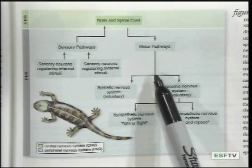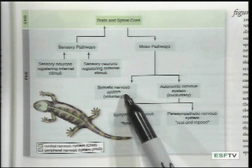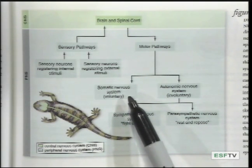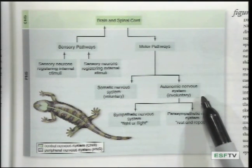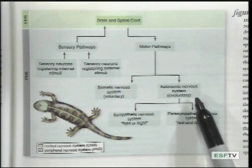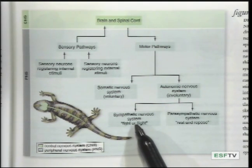The information is integrated and then a response is sent out via the motor pathway. Within this pathway, the information can go via the somatic nervous system — the voluntary nervous system going to skeletal muscles — or it can go via the autonomic nervous system, the involuntary system that innervates smooth muscles and cardiac muscles.